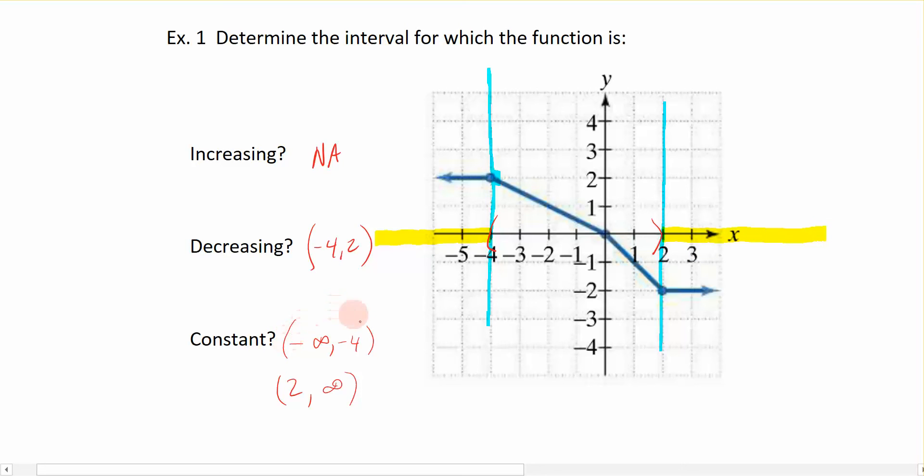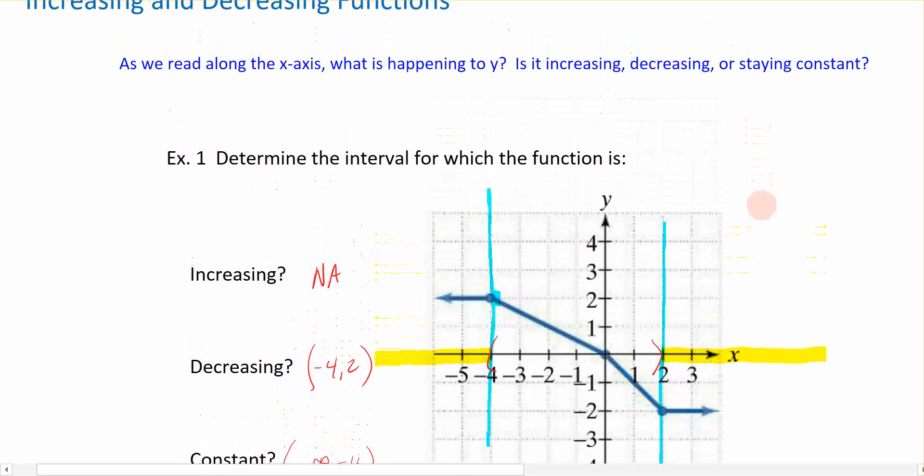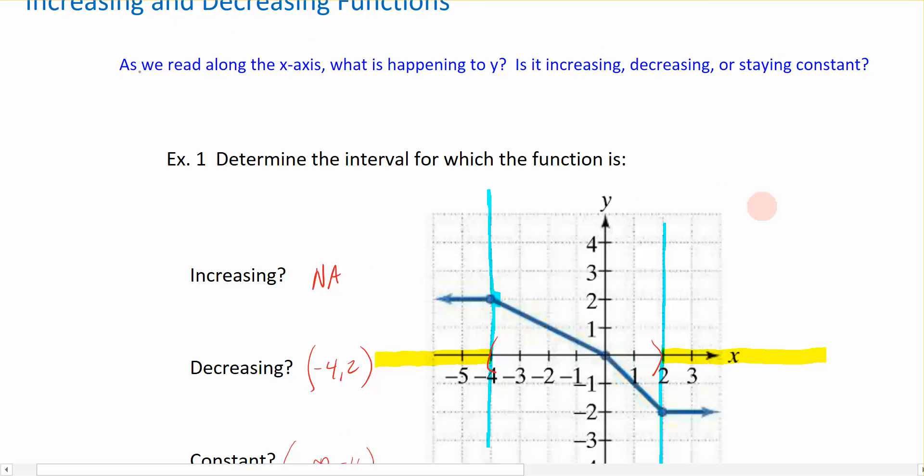And because this goes on forever, that would be positive infinity. Again, notice that we are not concerned with brackets or parentheses. It's only parentheses when you're referencing interval notation. So this is how we're going to look and determine increasing, decreasing, and constant. Again, one more time. As we're reading along the x-axis, it's the y values that determine increasing, decreasing, or constant.